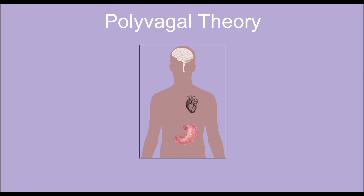This theory is made up of two root words: poly, meaning many, and vagal, meaning nerve. The vagus nerve starts at the top of our bodies and ends at the base of our spine. This nerve has branches that reach out to all the different parts of our body, and it is the captain of the autonomic nervous system.